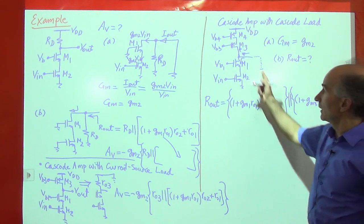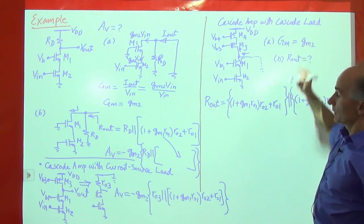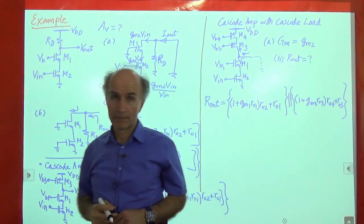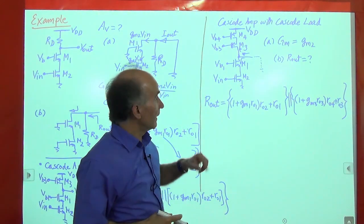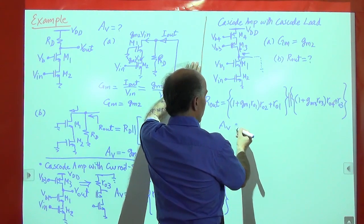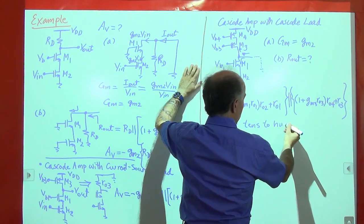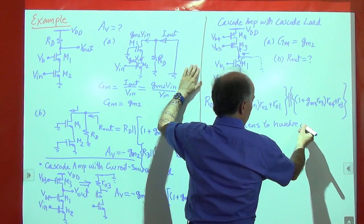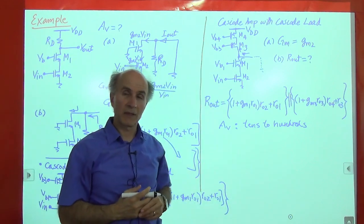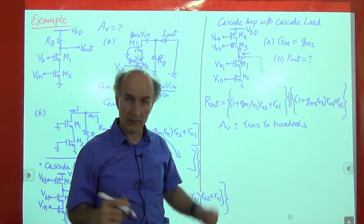GM is just GM2, so the product of GM2 and the parallel combination gives the overall voltage gain. The voltage gain achievable from this stage is on the order of tens to hundreds, depending on technology and design — perhaps a gain of 50, 100, 200, or 300. This is essentially the best we can do in terms of voltage gain from a single amplifier stage.